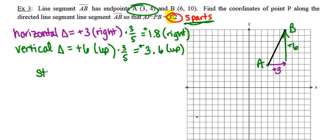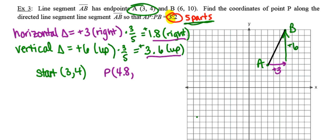Starting at point A with coordinates (3, 4), I move 1.8 to the right — that's like adding 1.8 to the x-coordinate — ending at an x-coordinate of 4.8. Then I move 3.6 units up, adding 3.6 to the y-value of 4, which gives me 7.6. So my point P, which partitions the segment into a ratio of 3 to 2, is going to be (4.8, 7.6).